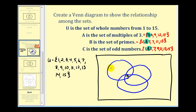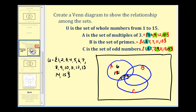Let's label the circles set A, set B, and set C. Focusing on set A: other than three, A and B share no common elements, but A and C both contain nine and fifteen. So nine and fifteen go in the region where A and C overlap. The remaining elements of set A — six and twelve — go in the region belonging only to A.